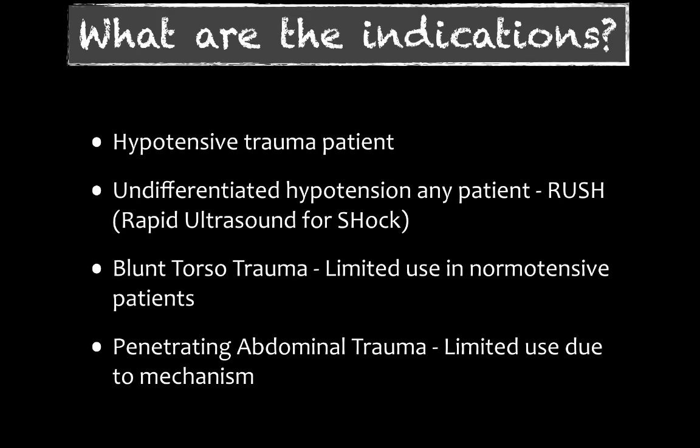Indications include a hypotensive trauma patient, any hypotension, or undifferentiated hypotension. Many of you have heard of the RUSH exam — rapid ultrasound for shock — and the Trinity. Several protocols use a component of the FAST to evaluate for hypotension, so don't be afraid to use this in medical patients. In trauma, it's primarily for blunt torso trauma. It has limited use in penetrating trauma because many of those injuries may not hemorrhage extensively, and remember you're not identifying the primary injury.